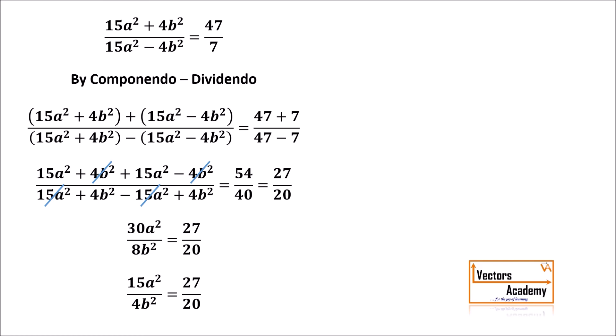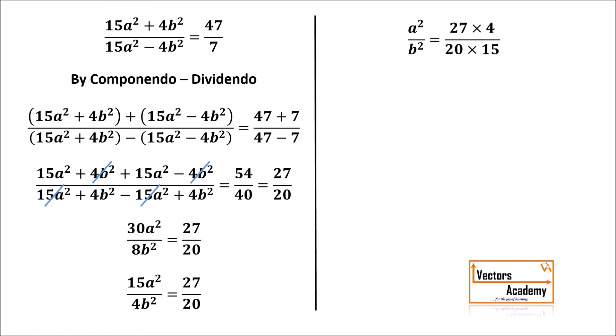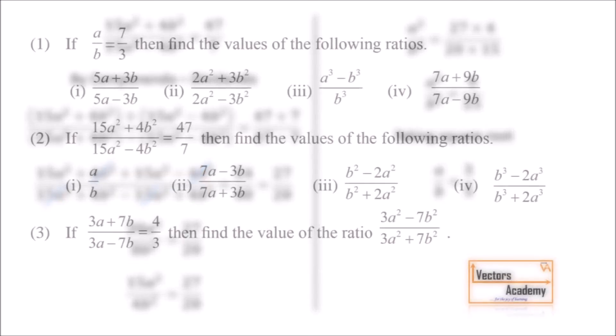Cross multiplying just the coefficients 15 and 4 to the right-hand side gives A² upon B² equal to 9 by 25. Since we have the square of the variables, we take the square root of both sides, giving A/B equal to 3 by 5. Here are some questions which you can try on your own.